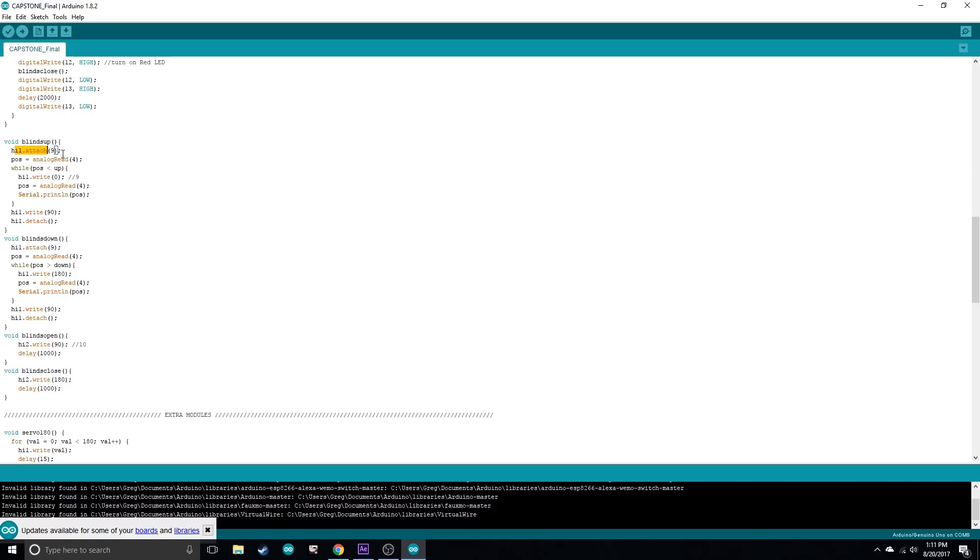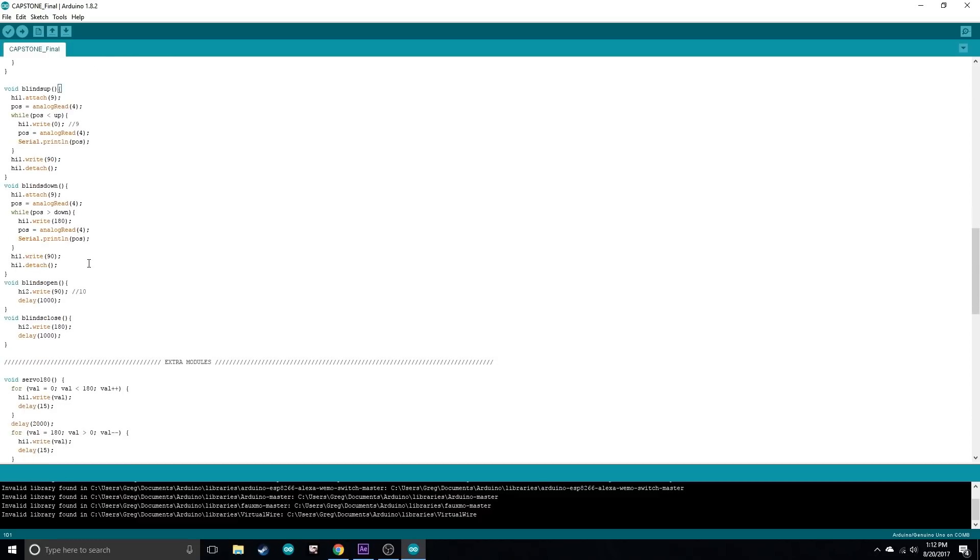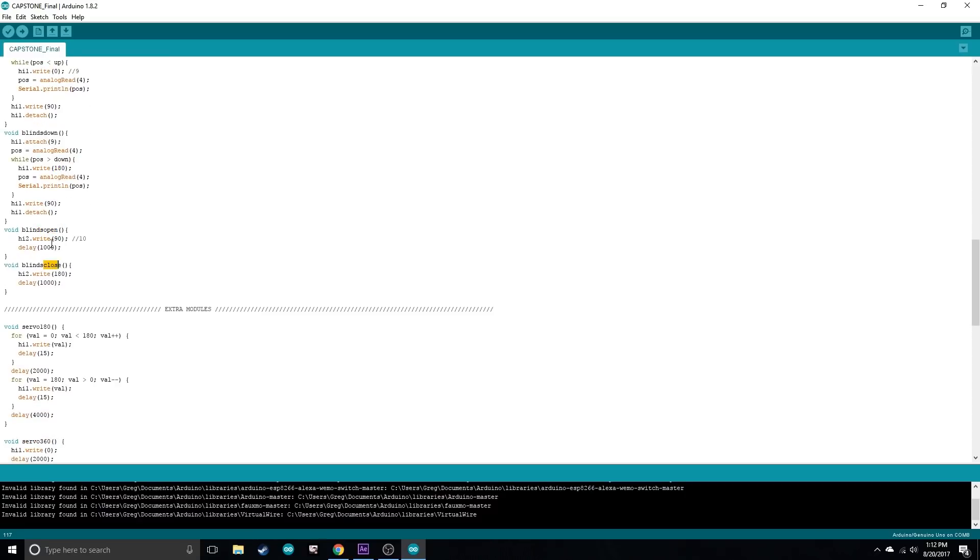And then if we come down here to look at these functions, here I attach the servo, and then it reads the position of the blinds at that moment. Okay, so if it's all set to do so, while the position is lower than the up position, it's going to continuously write the servo to lift the blinds up while continuously checking the position of the blinds until it reaches this spot. And once it does, it writes it to 90 which stops it, and then I detach it so that it has no movement whatsoever. And that's the same thing for blinds down, except I just change the zero to 180 for the direction. And then blinds open and blinds close I just have it set to turn to a certain angle which I've predetermined beforehand.